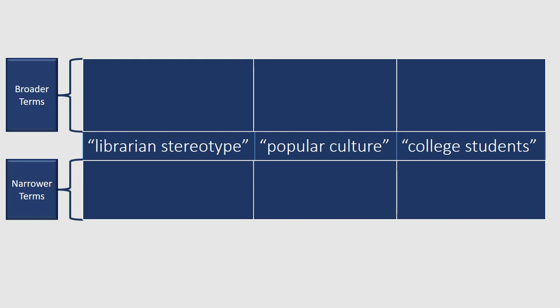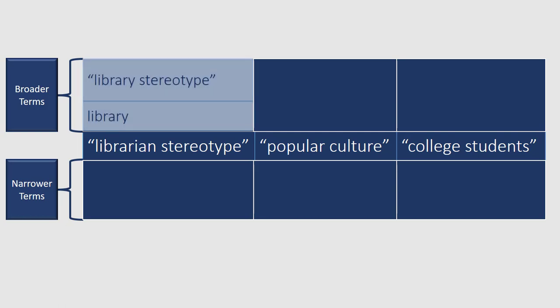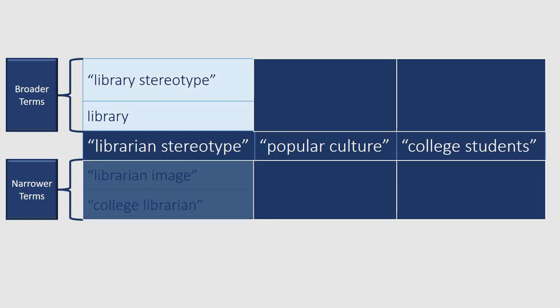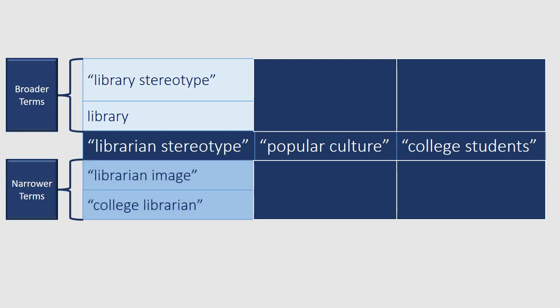In this example, our first key phrase is librarian stereotype. Related but broader terms could be library stereotype or library, while related but narrower terms could be librarian image or college librarian. You can probably think of a few more, but this is a good start.